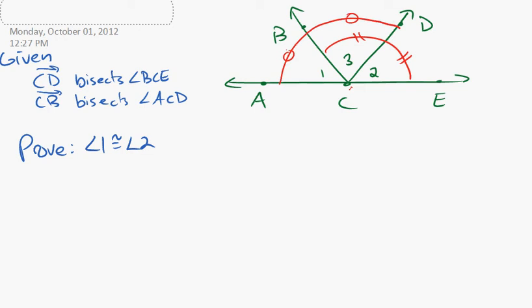What we're being asked to prove is that angle one and angle two are congruent. So I want us to consider this for a second. What do we know angle one is congruent to right away? Angle one is definitely congruent to angle three because of the bisection.